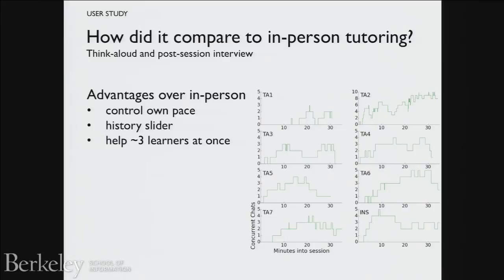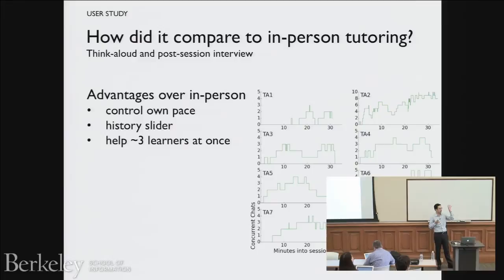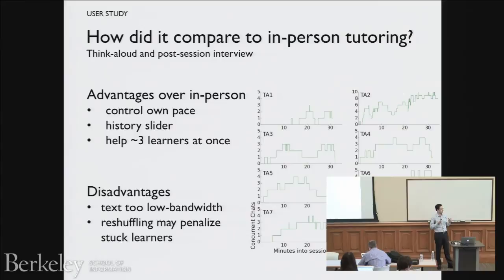That's about two or three simultaneous chats — which is sort of the number you'd expect. It's hard to imagine someone helping 30 people unless they're really fast at typing. But the idea is that you can help someone and while they have lag time doing their work, you can jump to other people and multitask in a way you can't do in real life.